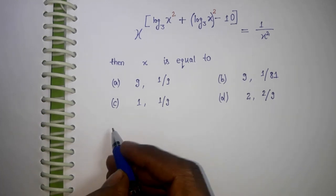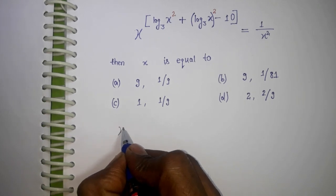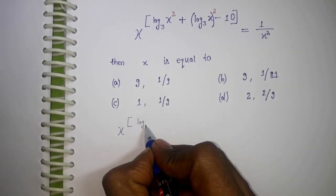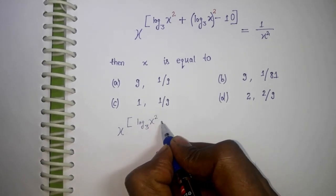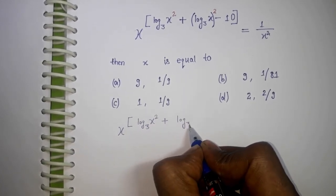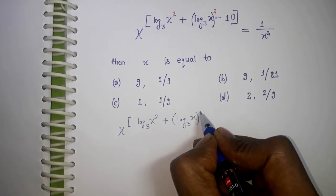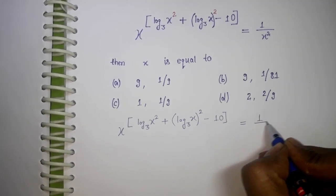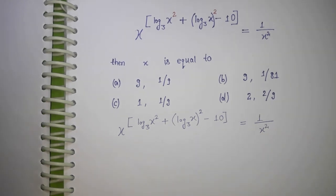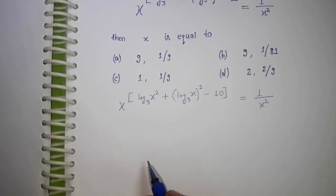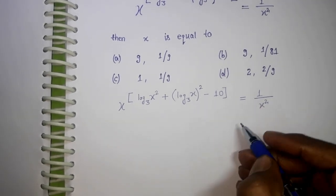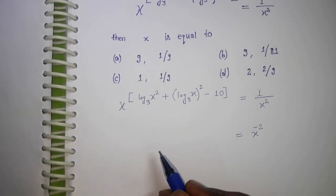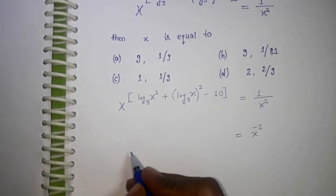So here we have x to the power [log₃(x²) + (log₃x)² - 10] equals 1 upon x². Now this can be written as x to the power -2.